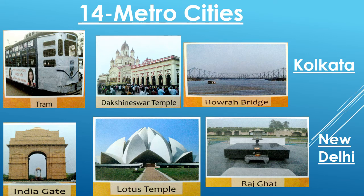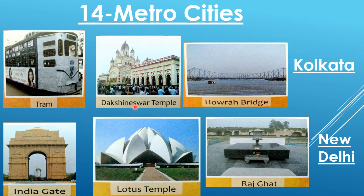Metro cities are very big and famous cities where there is a very large population and they are very well known. Today we will study some of India's famous metro cities. Here we have pictures of famous places from famous cities, and we have to look at those pictures to identify which city it is. Number one — Tram! A tram is neither a bus nor a train; it is a different vehicle found mostly only in Kolkata in our country. Dakshineshwar Temple is also famous in Kolkata. Howrah Bridge — this is the most famous place of Kolkata and it is Kolkata's identity.